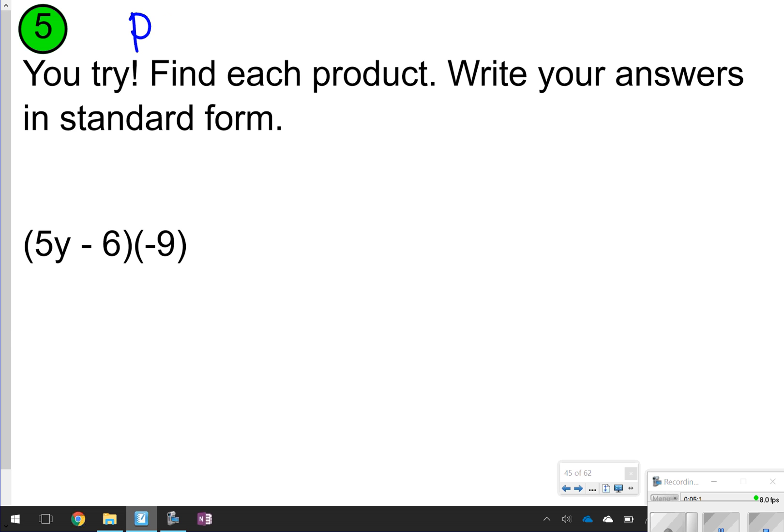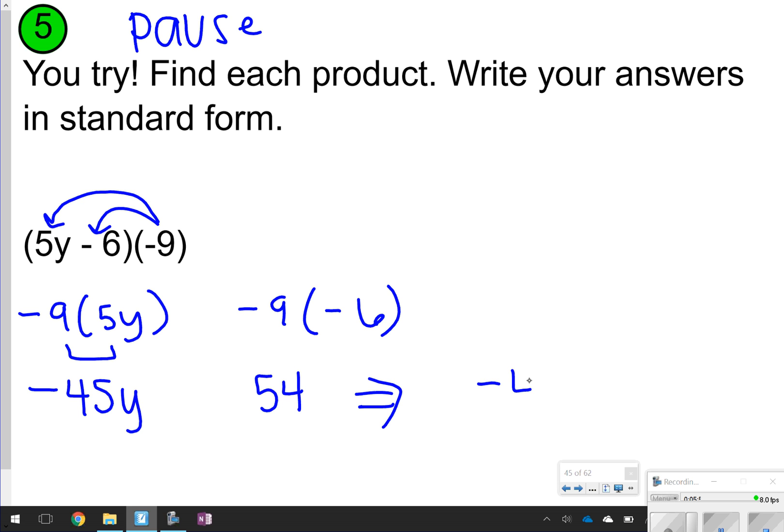The last one, again, pause by yourself, try it, and then once you're done, click play. Alright, here we go. Again, distributing the number on the outside of the parentheses. This time we're working a little bit backwards. Negative 9 is being distributed to 5Y and negative 6. We haven't really seen this part before when you're multiplying a number and a number with a variable, but you still can multiply them. You just can't add them together. So negative 9 times positive 5Y will give you negative 45Y. And negative 9 times negative 6 will give you positive 54. Put them all together, we'll get negative 45Y plus 54. How did you do?